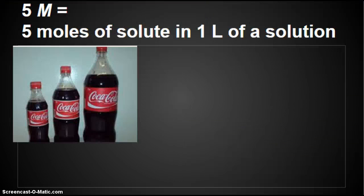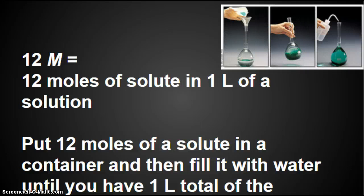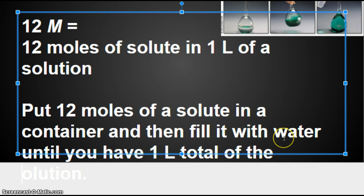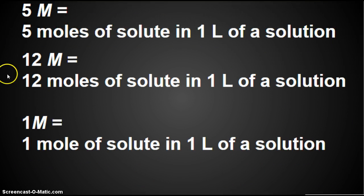5 capital M or 5 moles per liter means there's 5 moles of solute in 1 liter of a solution. 12 molar means 12 moles of solute in 1 liter of a solution. So they added 12 moles of the solute and then they kept adding water until they had a total of 1 liter of solution. 1 molar means 1 mole of a solute in 1 liter of a solution.